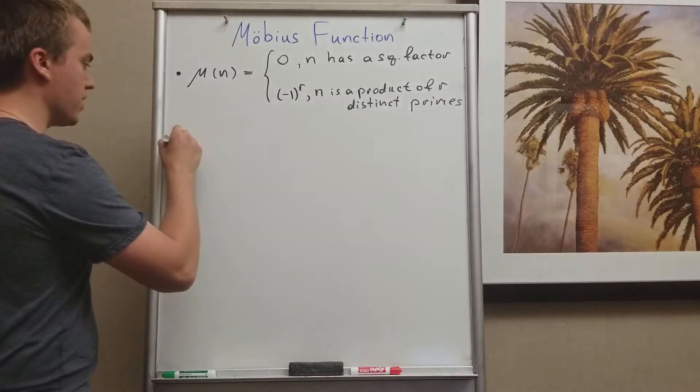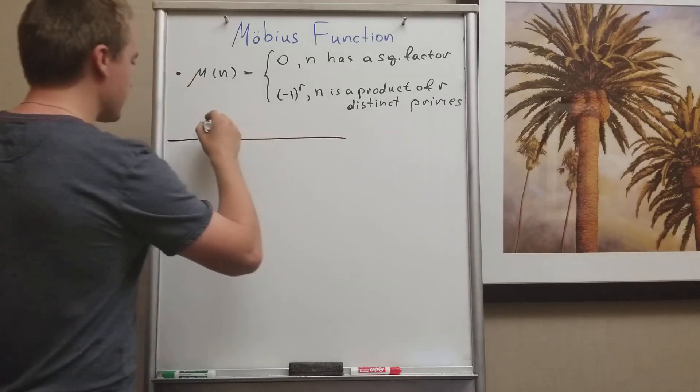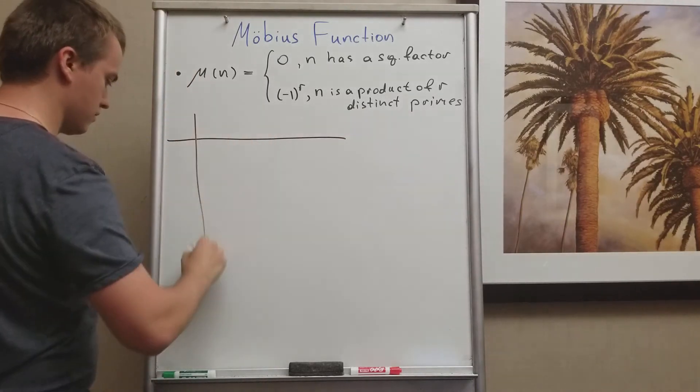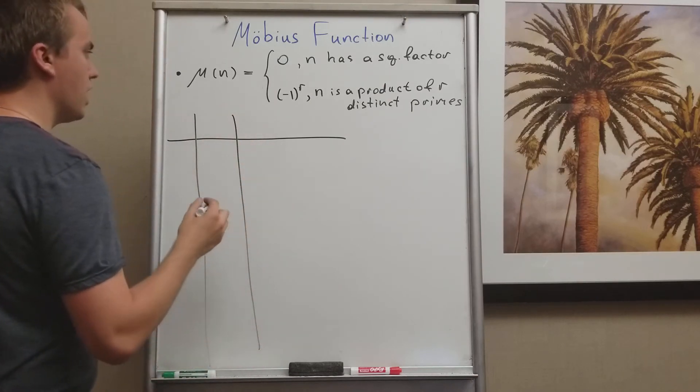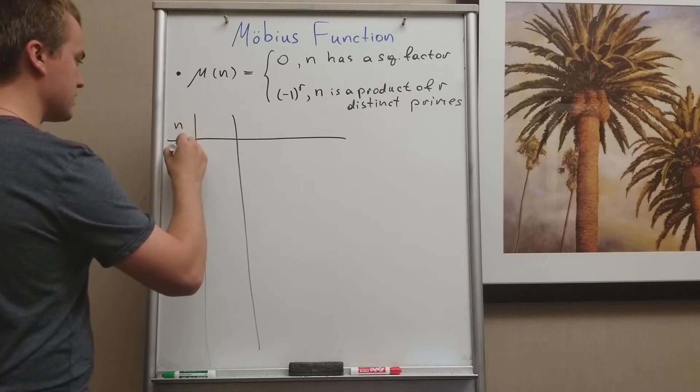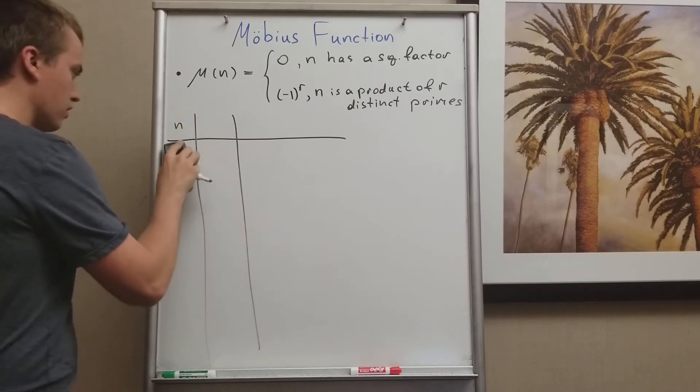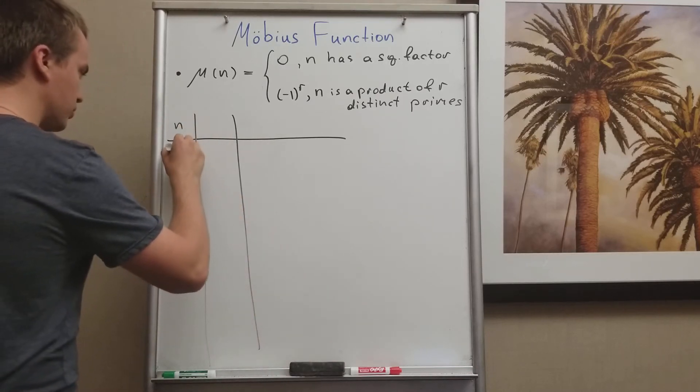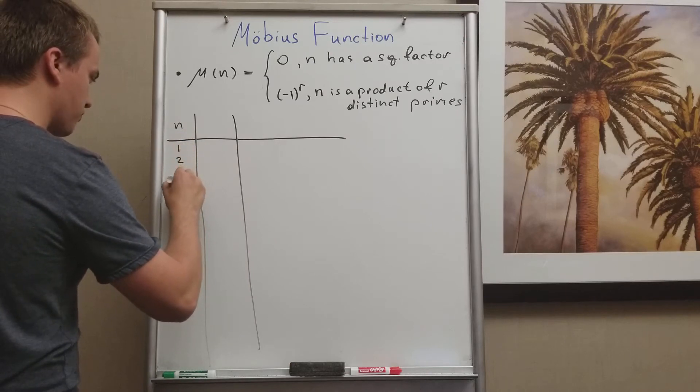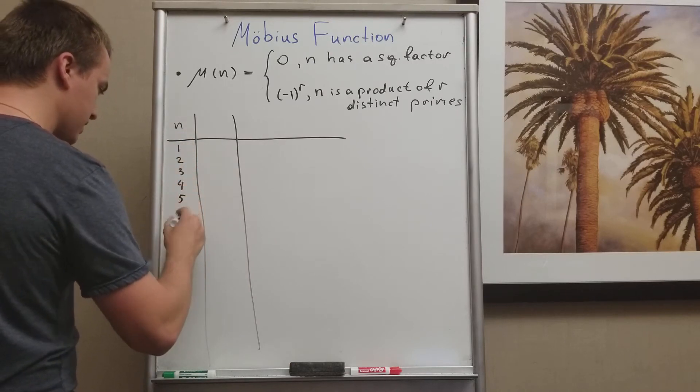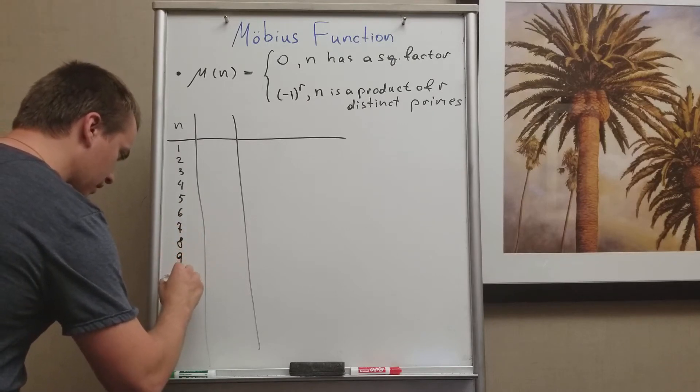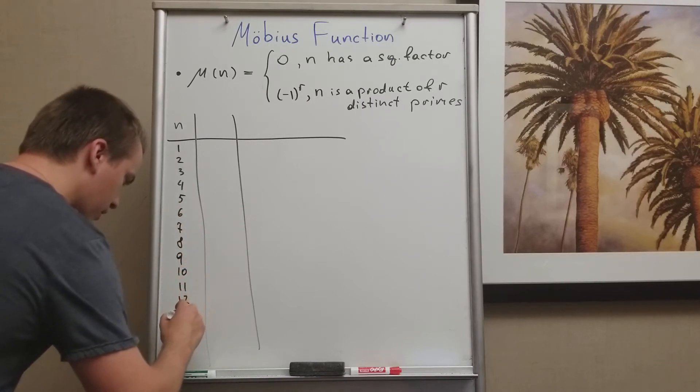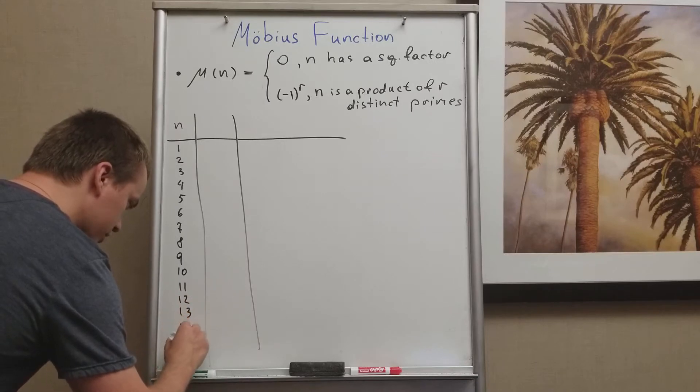But before, let's just make some observation. Let's take some n's, and what I'm going to do with these n's: let's take n equals 1, 2, 3, 4, 5, 6, 7, 8, 9, 10, 11, 12, 13, 14, and 15.